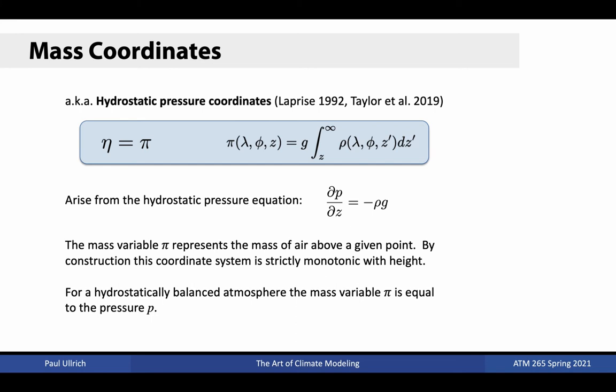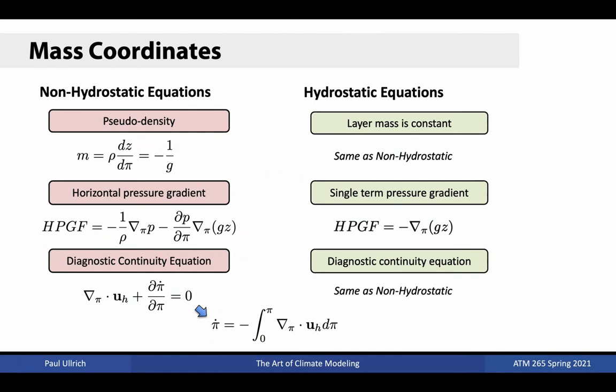Consider mass coordinates, also known as hydrostatic pressure coordinates, as described by Laprise in his 1992 paper. In this system, the coordinate is defined as the mass of air above a given point. By construction, this coordinate is strictly decreasing with height and so is monotone. For a hydrostatically balanced atmosphere, the mass variable pi is exactly equal to the pressure p. Under mass coordinates, the pseudodensity is equal to negative 1 over g for both non-hydrostatic and hydrostatic equation sets, enabling significant simplifications. However, the horizontal pressure gradient in mass coordinates has two terms in the non-hydrostatic case, requiring us to track the altitude variable z on pi surfaces. In both cases, the continuity equation is diagnostic, allowing pi-dot to be obtained via an integral from the top of the atmosphere.